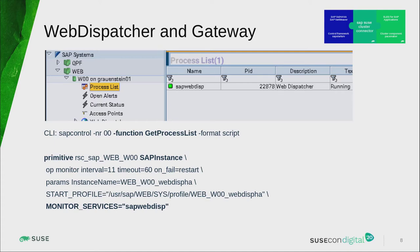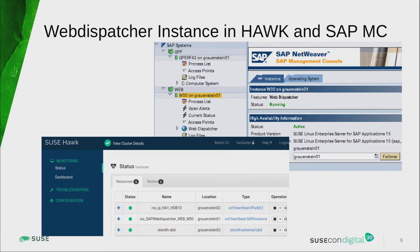We have published that in a blog on our web pages. On the SAP side, you can see that we have selected here an SAP system WEB and a WOO instance which is driving the web dispatcher. You can see that in the tab for high availability on the right, you can even see the product you are using — it has been integrated in the cluster and running on a node named kronstein01. On the left and bottom of the slide, you see the graphical occurrence in the SUSE HA web console, which is an interesting thing to have: is everything in my cluster fine and running? Here you see three green dots matching to the IP address, the web dispatcher, and the stoned SBD.